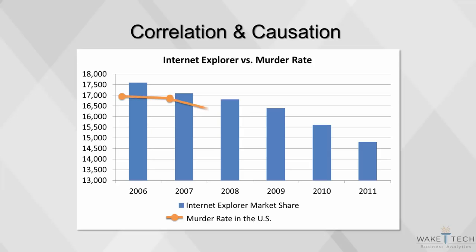Correlation does not imply causation. It's easy to see that in this chart, the Internet Explorer market share correlates with the murder rate in the US, but that doesn't mean that one caused the other. Causal relationships are determined based on facts and business models. We cannot determine causality from data. Correlation is a mathematical formula — you will get a number no matter what data you feed. First you need to establish a logical relation, and then find the correlation.